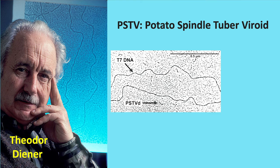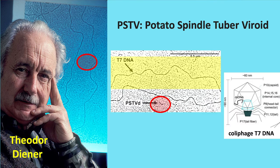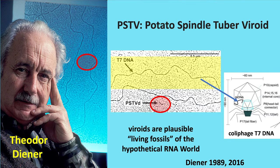Here's Theodore Diener. In his photograph, the red circle shows potato spindle tuber viroid RNA — a short black segment. Another piece is visible in the photograph behind his head. For comparison, the T7 DNA shown in yellow comes from the coliphage T7. The double-stranded DNA on black is the same in both images. Viroids are plausible living fossils of the hypothetical RNA world — that's what Diener has said.